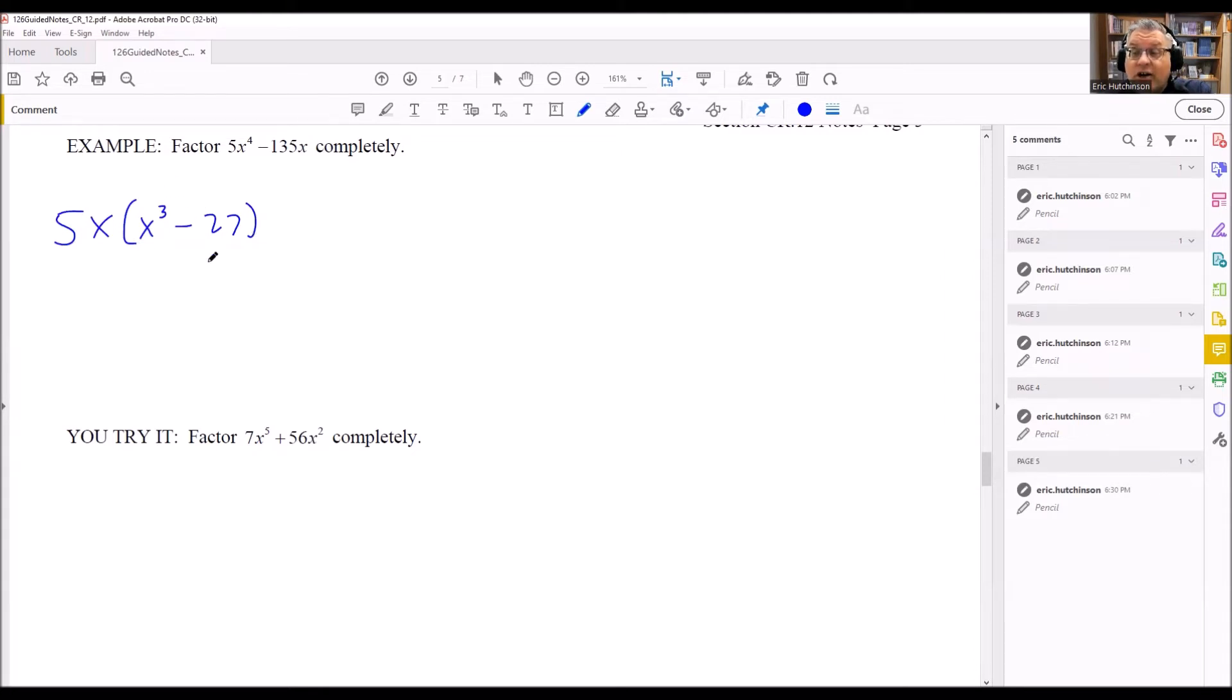Now what we notice inside there is this is going to be a difference of cubes. The difference of cubes formula, if you have a cubed minus b cubed, it's going to factor into a minus b times a squared plus ab plus b squared. That's what the difference of cubes factors into.